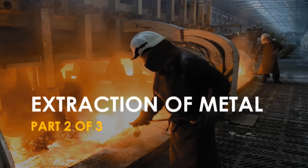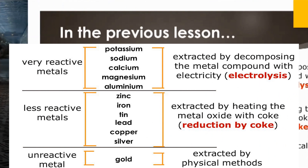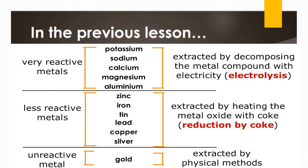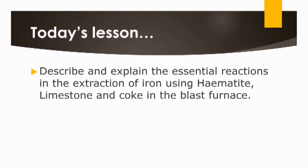Hi students, welcome to part 2 of the videos. In the previous lesson we talked about how the reactivity series can be used to determine the method of extraction. In today's lesson we zoom in on the extraction of iron using three raw materials: hematite, limestone, and coke.